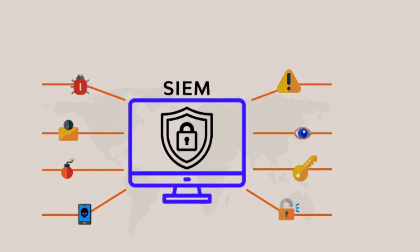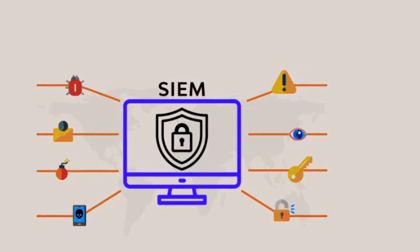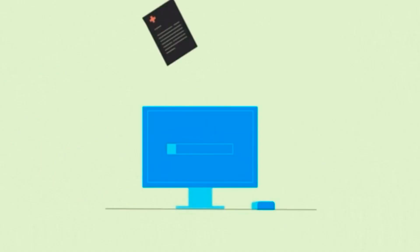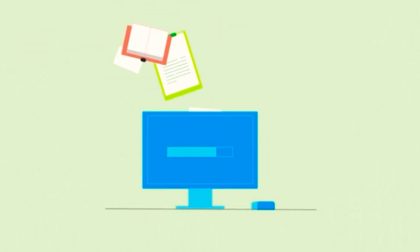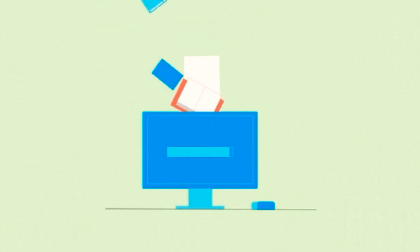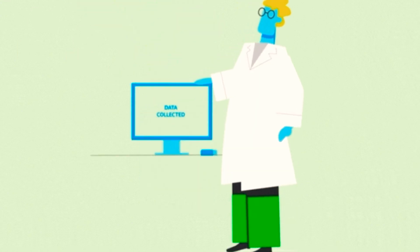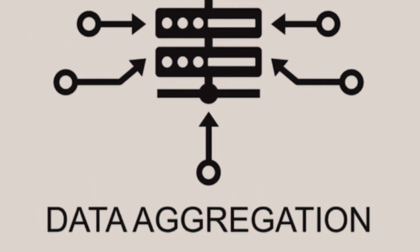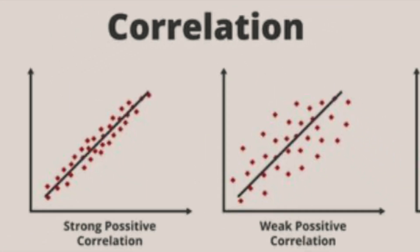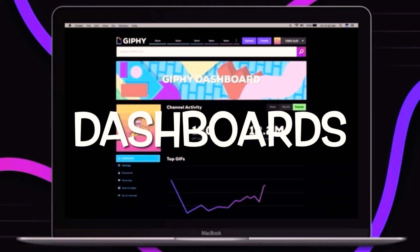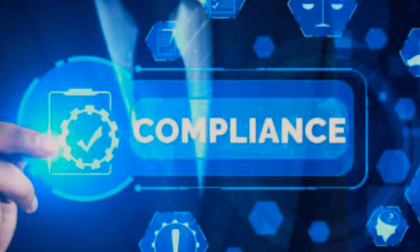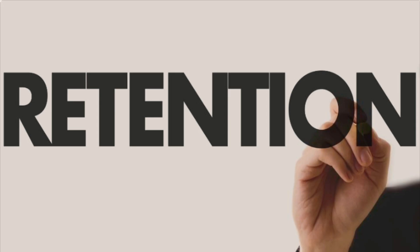The heart of any SIEM system is its ability to take in vast amounts of data and distill it into actionable information. The components that make this possible include data aggregation, correlation, alerting, dashboards, compliance, and retention.